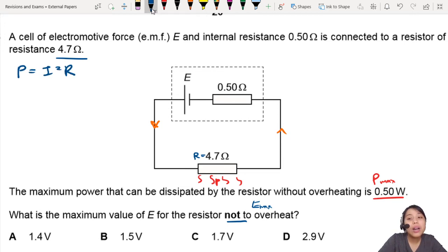P equals to I squared. We know that the maximum power will occur when this maximum current is there. So, 0.5 watts equals to some maximum current. I don't know what that is, but I'm going to find out. R is 4.7.